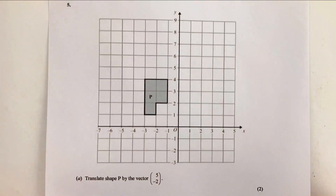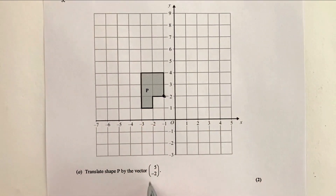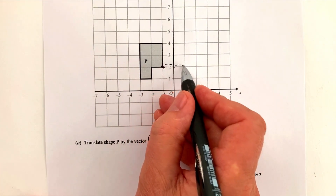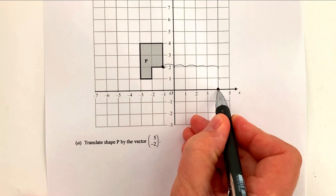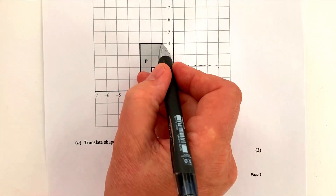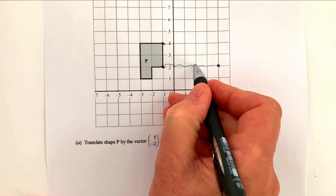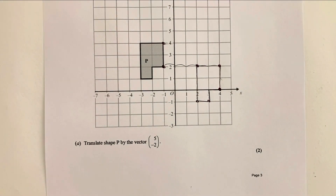Let's move on then to question number five, which is a translation one. What we're going to do is take any point and translate it by the vector of 5, minus 2. So if I just move this point along five jumps — one, two, three, four, five — and then two jumps down. This point is now going to go from there to there. I do the same for every other point: five along and two down. After a while, what you'll end up with is a shape that is the translation of shape P with that particular vector.